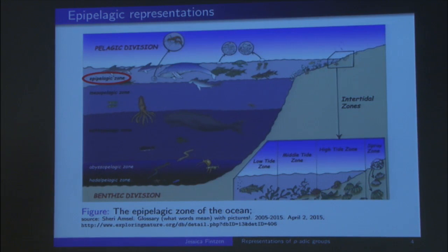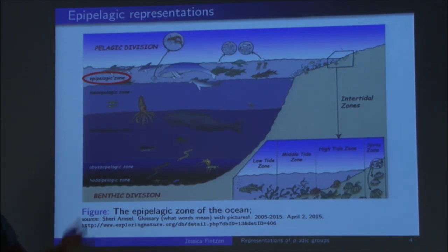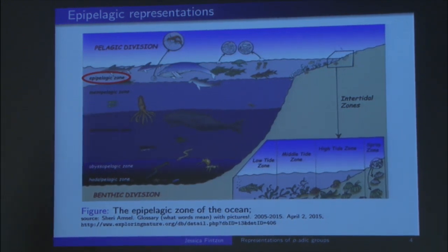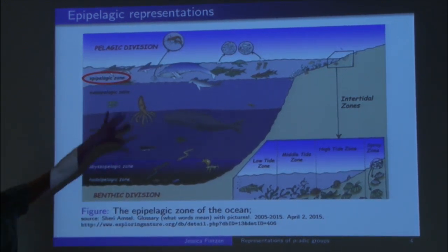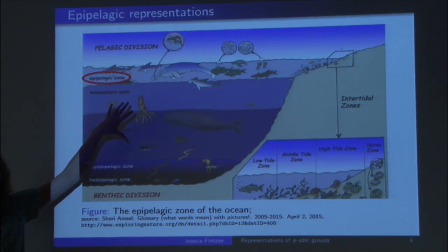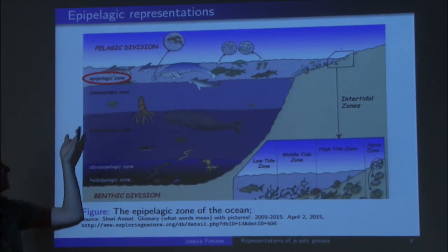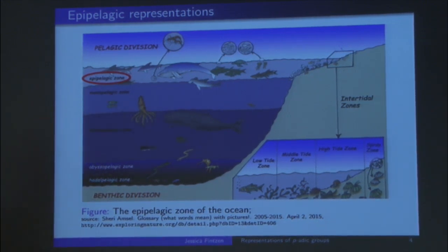Mark Reeder, when I asked him why he called them that, told me he thinks of representations as some fish swimming in the ocean — and then it's obvious how to call them.